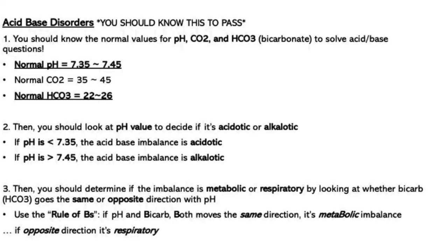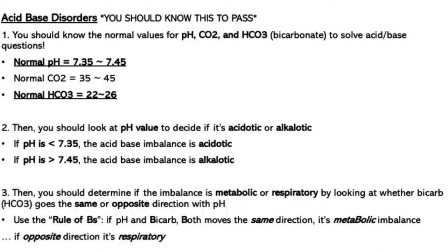Acid base balance. If they give you an arterial blood gas value, convert it to words: metabolic acidosis, metabolic alkalosis, respiratory acidosis, and respiratory alkalosis. To pass the exam you should know the normal values of the pH, CO2, and HCO3. pH normal level is 7.35 to 7.45. CO2 normal level is 35 to 45. Normal HCO3 level is 22 to 26. Acidotic if pH is less than 7.35, and alkalotic if pH is more than 7.45.